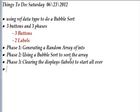In the previous tutorial we discussed the ref and out data types for arguments and parameters to functions. That involves passing an address rather than a value — you pass an address of some kind of data instead of the value of that data, and passing the address allows you to manipulate it. In this tutorial we're going to look at a practical application of using the ref data type to do a sort, specifically a bubble sort.